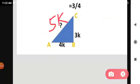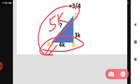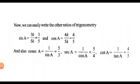So we get hypotenuse AC equals 5K. So we know three values: AB equals 4K, BC equals 3K, and AC equals 5K. Now we can easily write the other ratios of trigonometry.